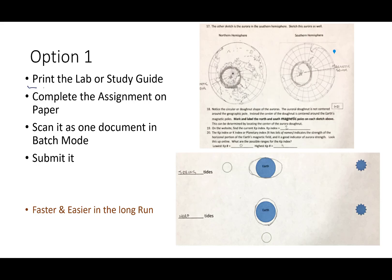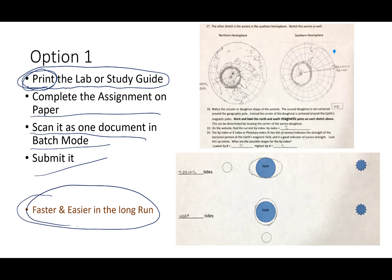One option is that you print the original lab or study guide, complete the assignment on paper, then scan it in the complete document in batch mode and submit it. The challenge for some people is this right here, printing. Truthfully, ladies and gentlemen, especially in astronomy, it's going to be faster and easier for you in the long run if you can once every month, once every two months, once every six weeks or whatever, find a place that you can just print the next batch of study guides and labs and then have these and do it this way. It's going to be just so much faster than you trying to fiddle-diddle around with trying to do this online.